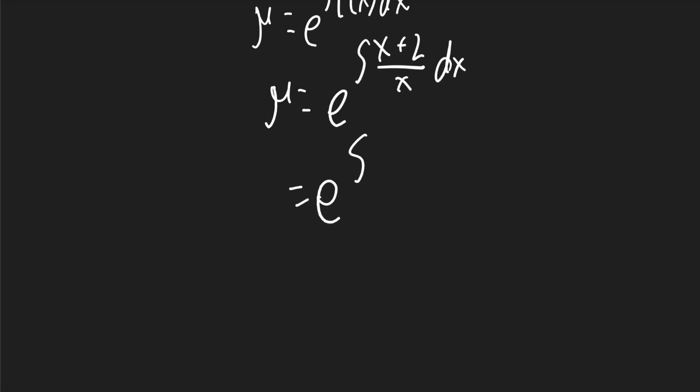I can split this integral into two separate integrals, the first being x over x and the other one being 2 over x. I'll just pull the 2 on the outside and it'll be 1 over x.